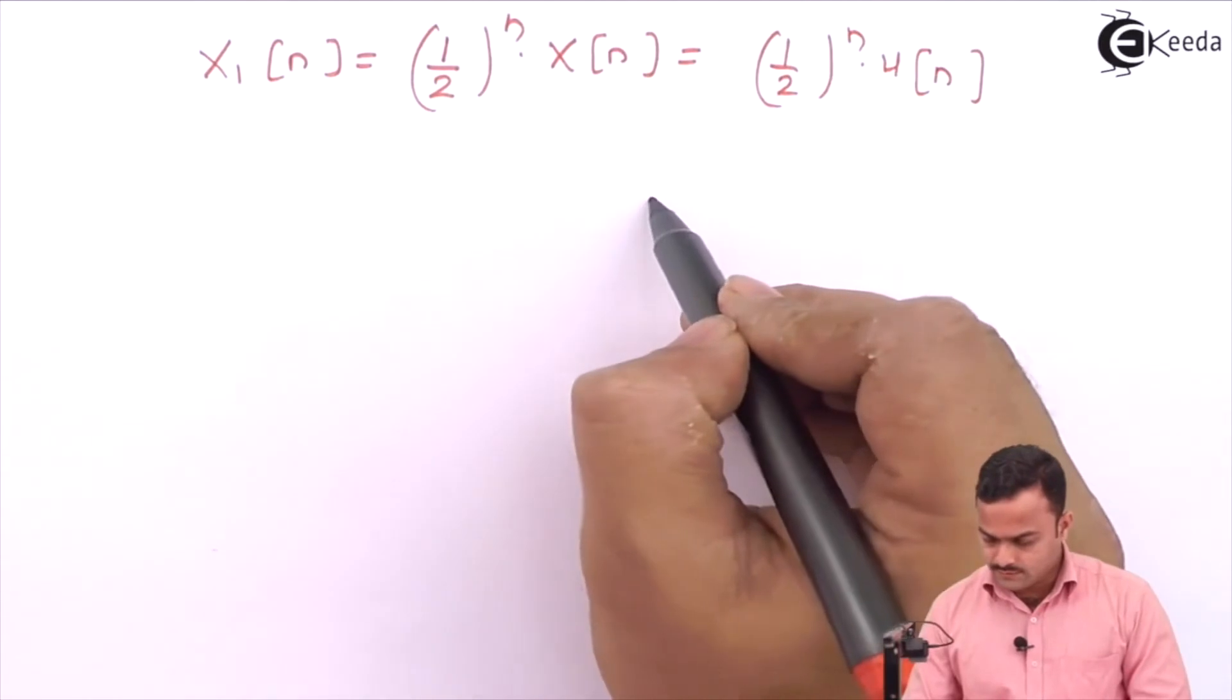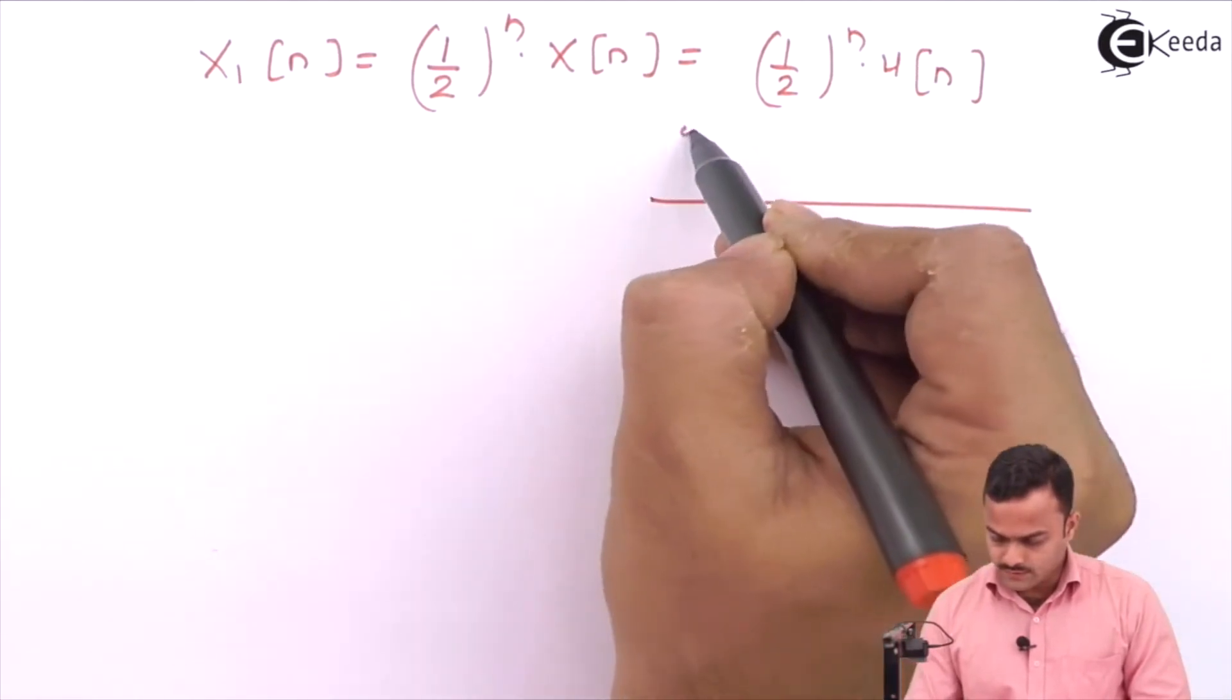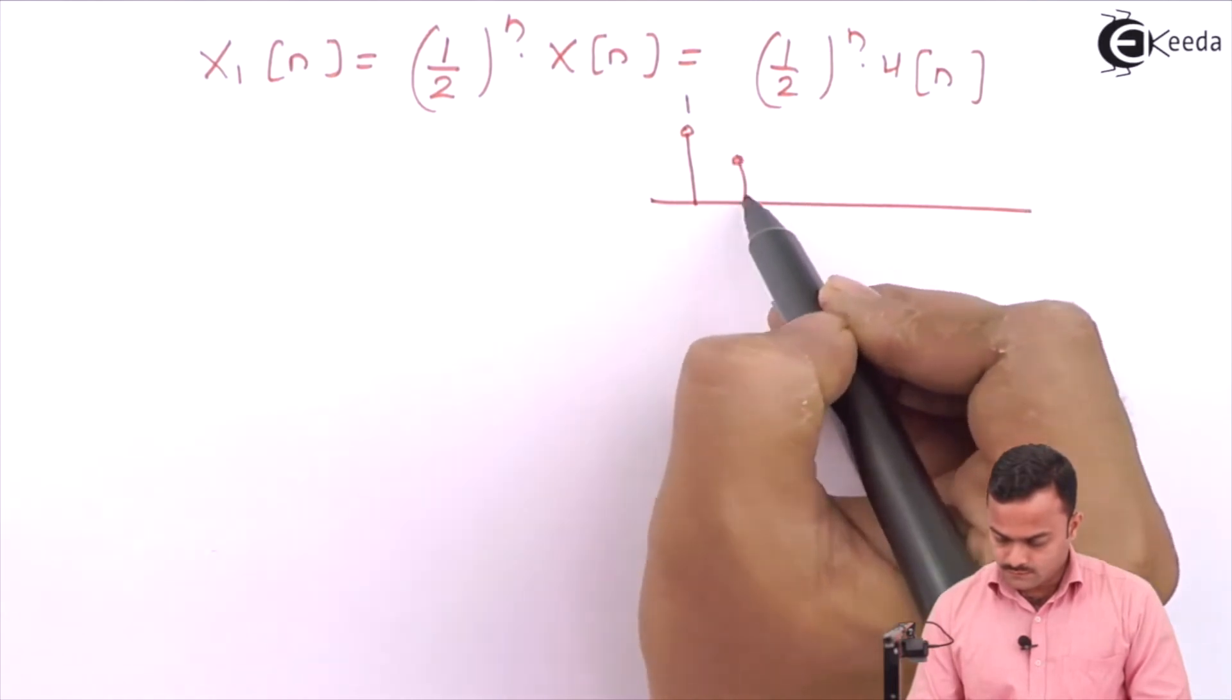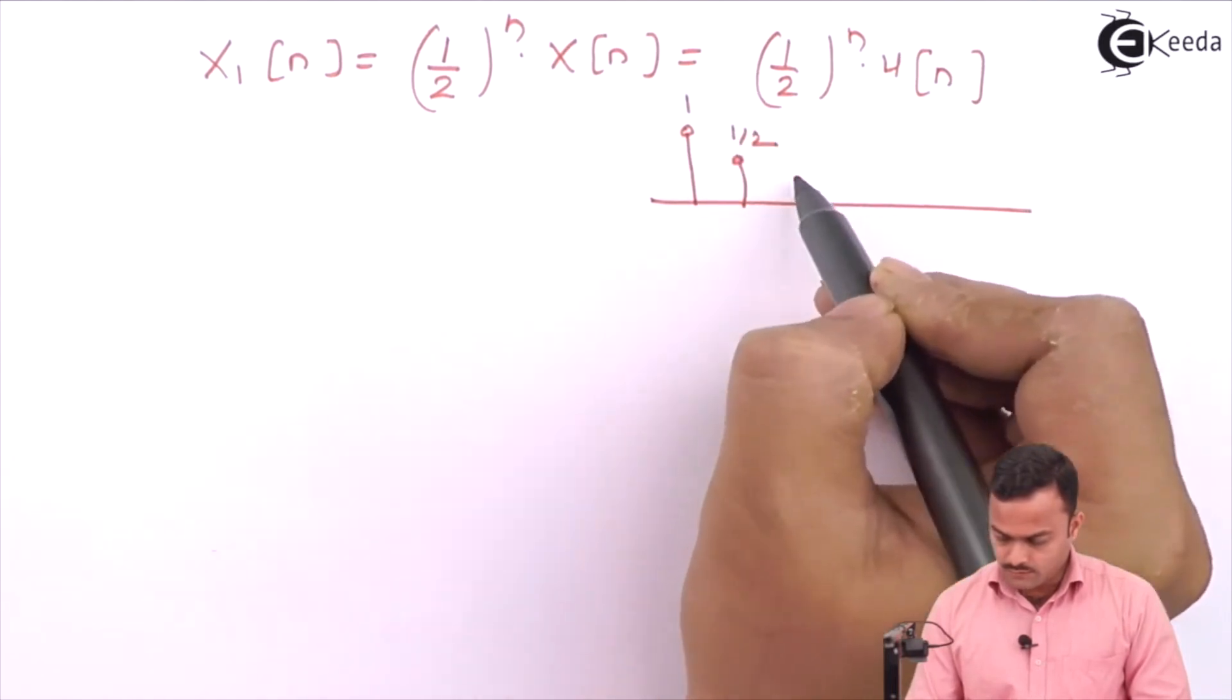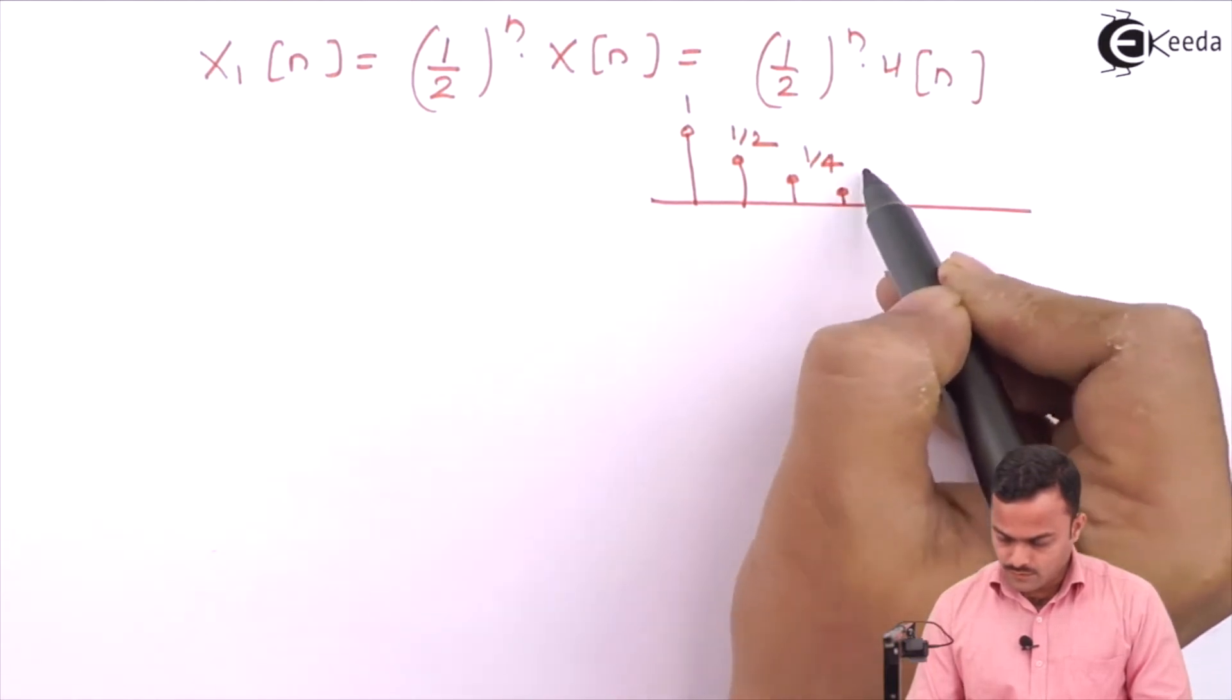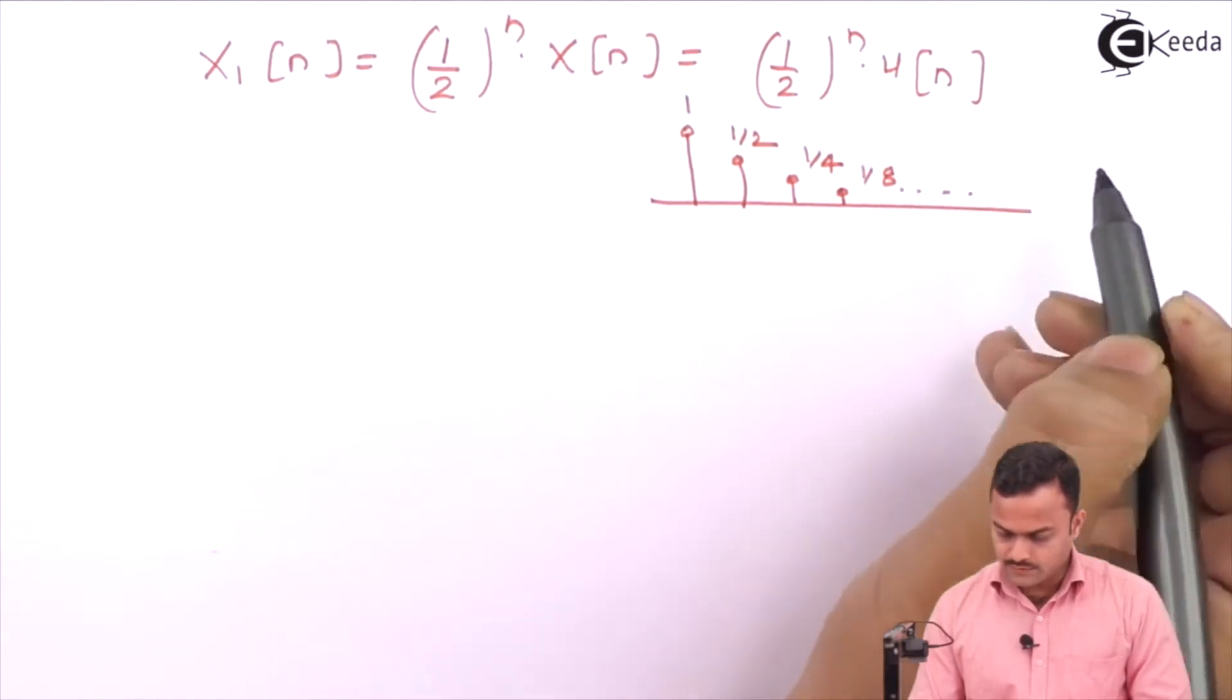If I plot this signal, it will be like this: 1, 1 by 2, 1 by 4, 1 by 8 like this.